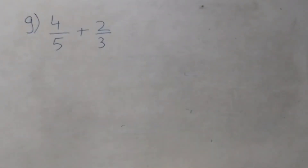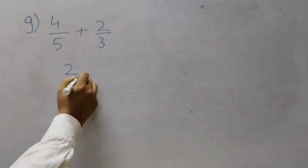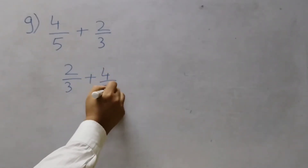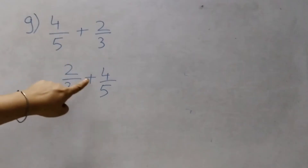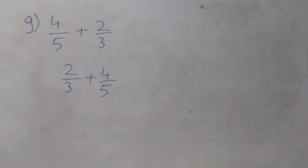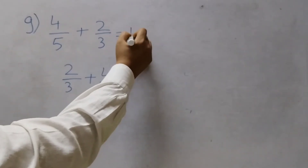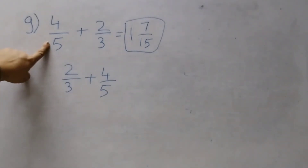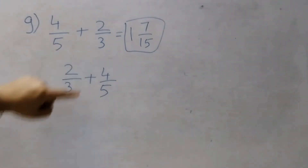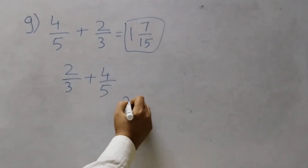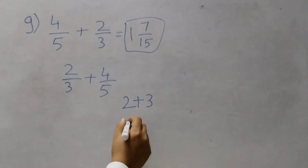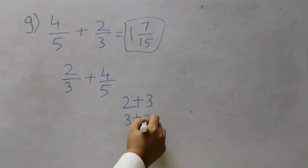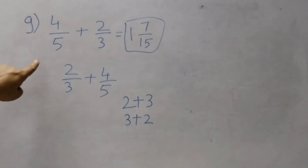The next one is G: 4/5 + 2/3. Notice that F was 2/3 + 4/5, so we are going to get the same answer because they have just written 4/5 first and 2/3 second. The answer would again be 1 and 7/15. You still solve it the same way — find the equivalent fractions and then add them up. Since we already did F, G should be easy for you.